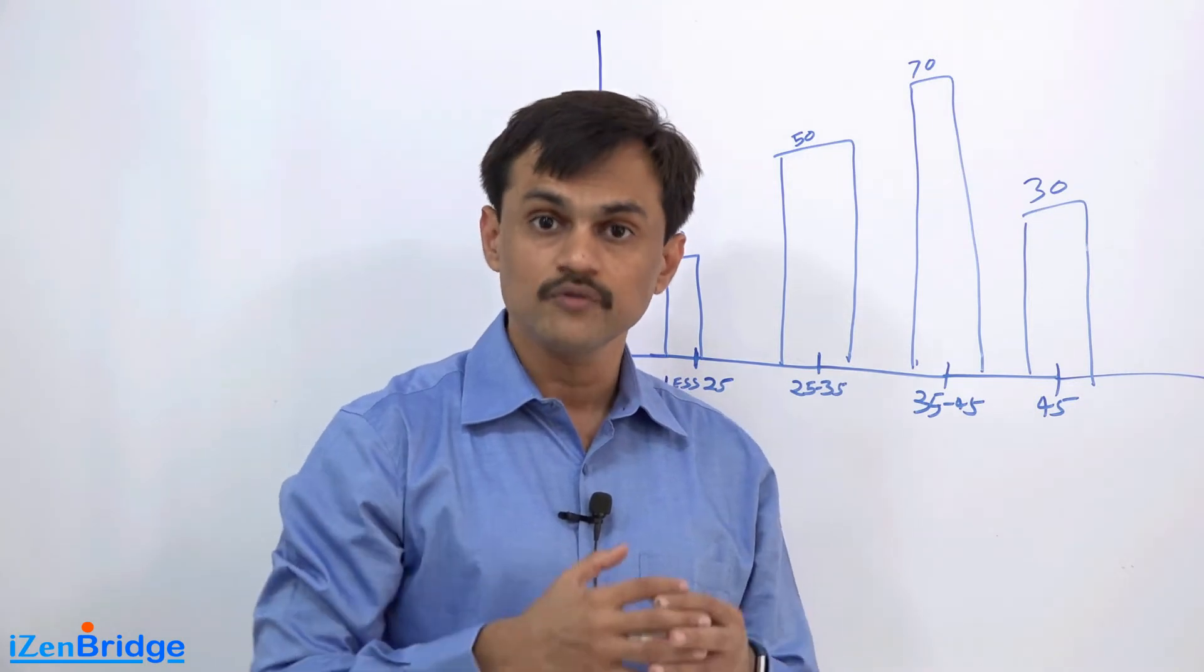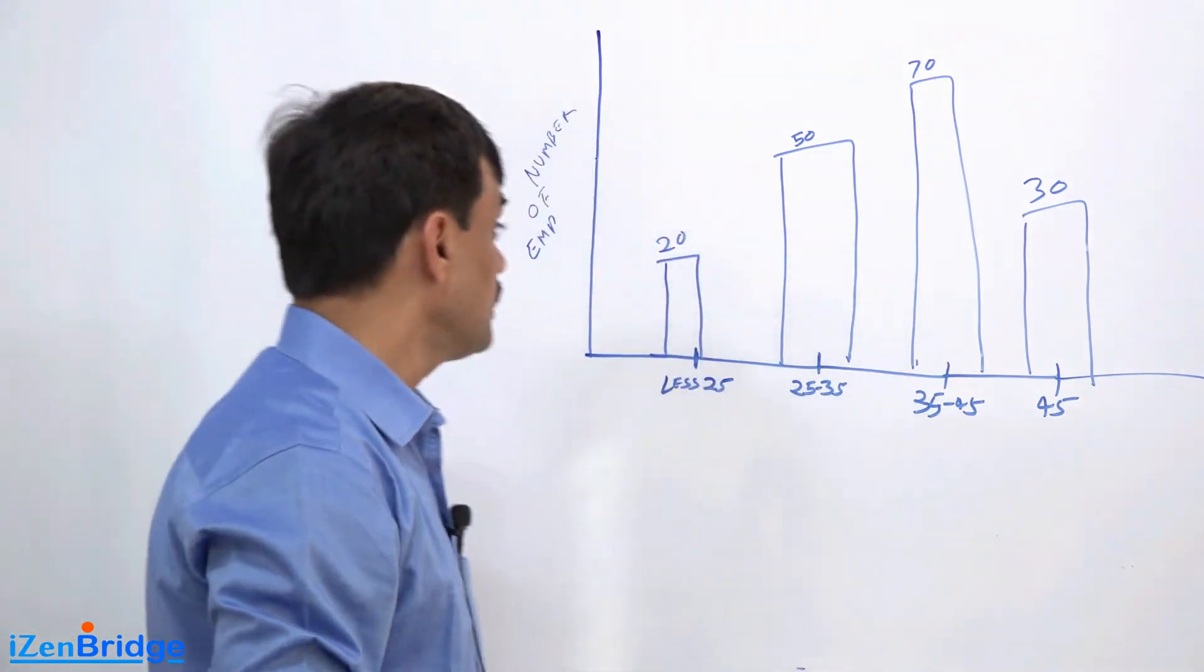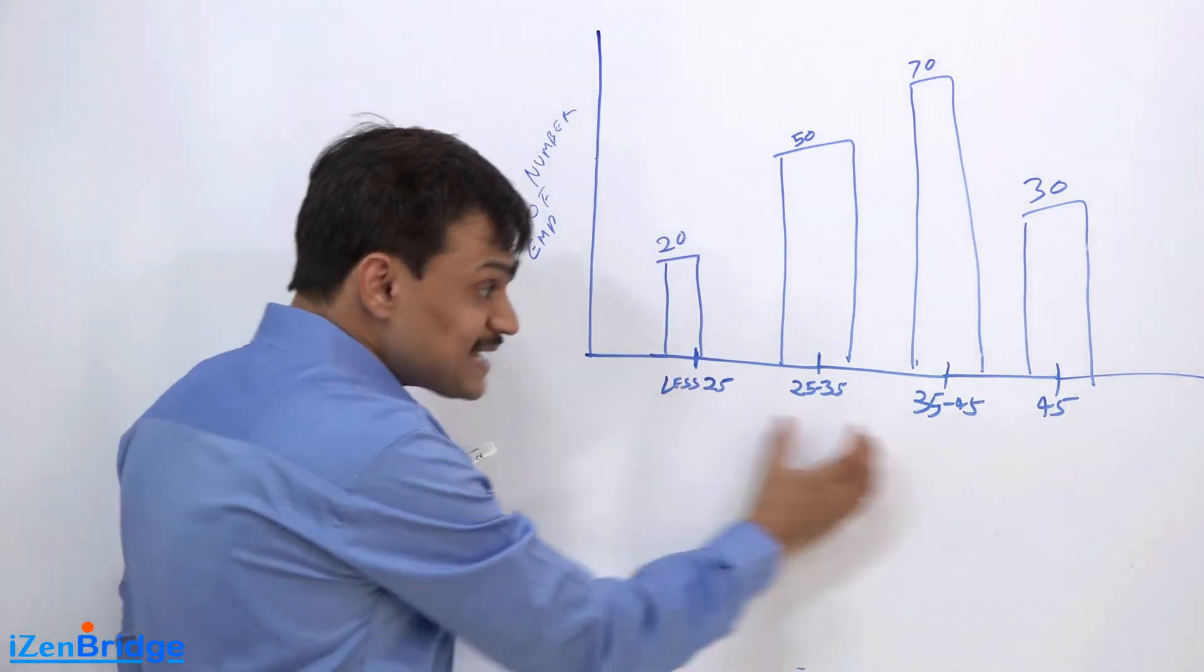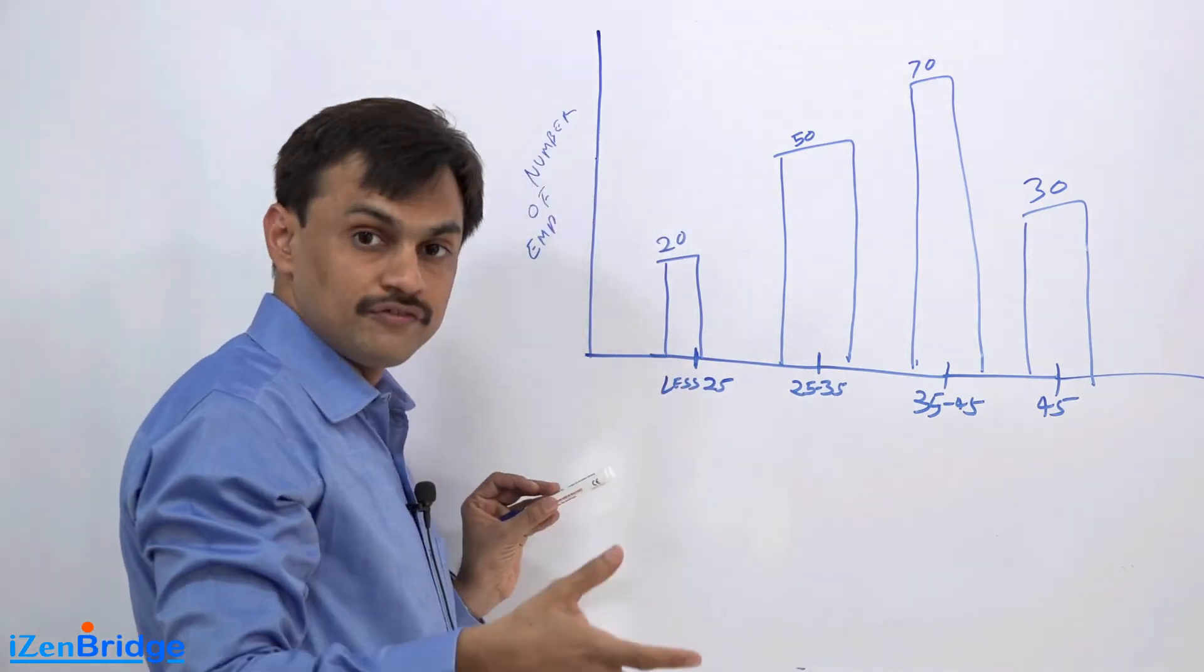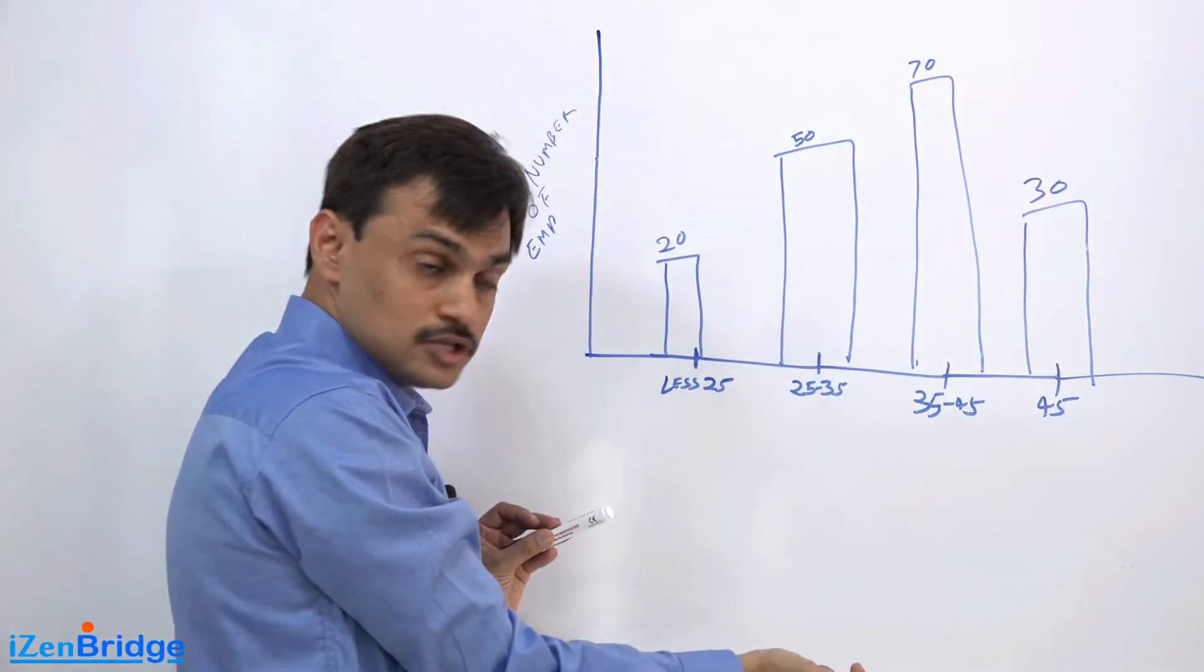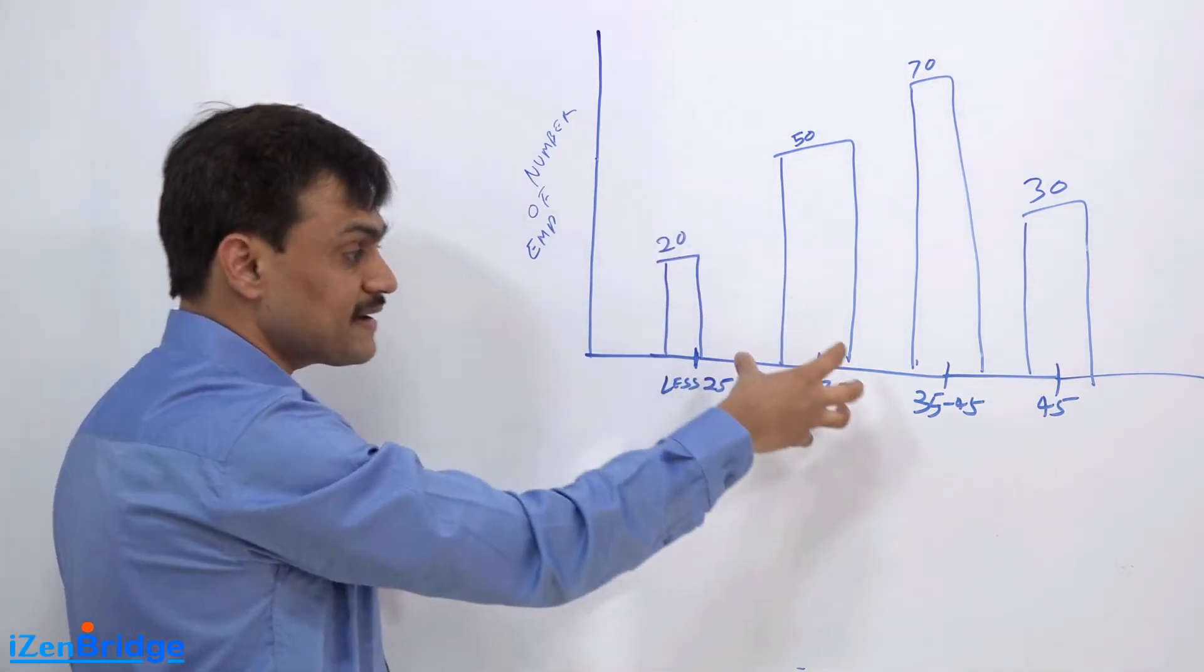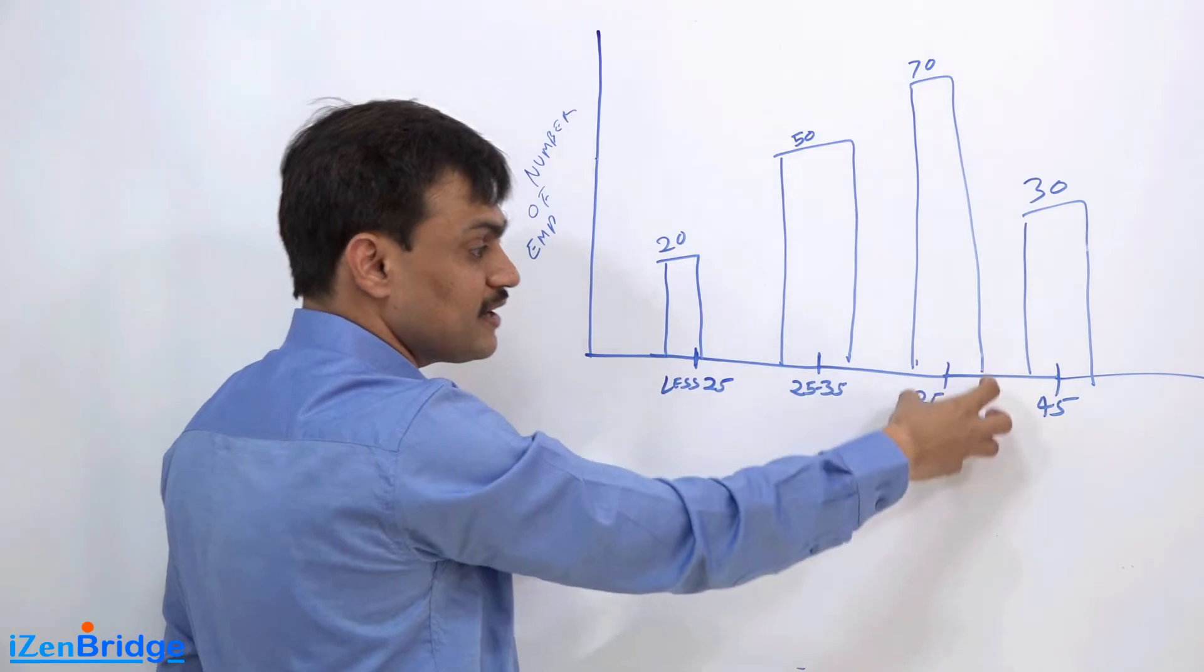You may want to present where this axis shows reasons for defects and this axis shows the number of defects. So it could be like you're showing reason A is generating this many defects, reason B is generating this many defects, reason C is generating this many defects.